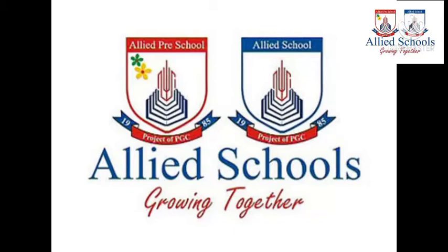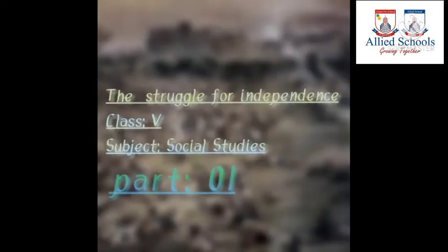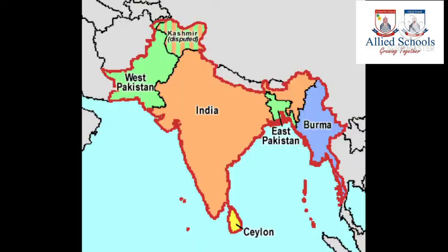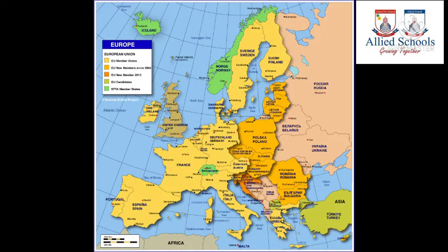Assalamu alaikum, Allied School Orangi Comprehensive Campus. Today the subject is History of Pakistan and our topic is the Struggle for Independence. Students, here is a world map on which Europe and the Indian subcontinent is shown, highlighted here in orange.